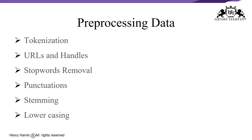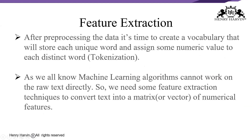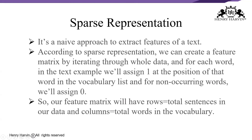After pre-processing, we create a vocabulary — either bag of words or similar — that stores each word and assigns a numeric value to each distinct token. Machine learning algorithms cannot work on raw text directly, so we use feature extraction techniques to convert text into a matrix or vector of numerical features. Using a sparse representation, we create a feature matrix by iterating through all the data; for each word present we assign 1 at its position in the vocabulary, and 0 for non-occurring words.